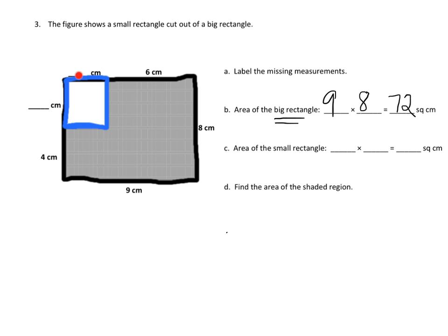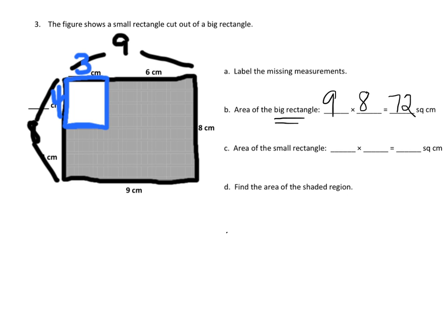Let's start with one side. We know the bottom is 9, so the top also has to be 9. Since this piece is 6, the missing piece must be 3. In the same way, if this side is 8, and over here we have 4 plus something, then the whole thing has to be 8, which means the missing piece is 4 — because 4 plus 4 equals 8. So now we know the small rectangle is 4 times 3, which is 12.